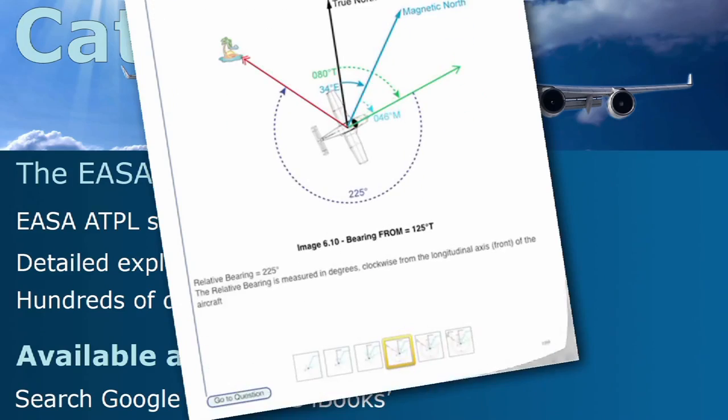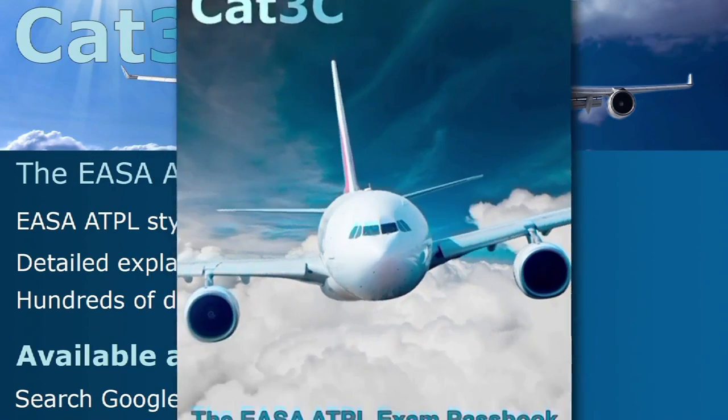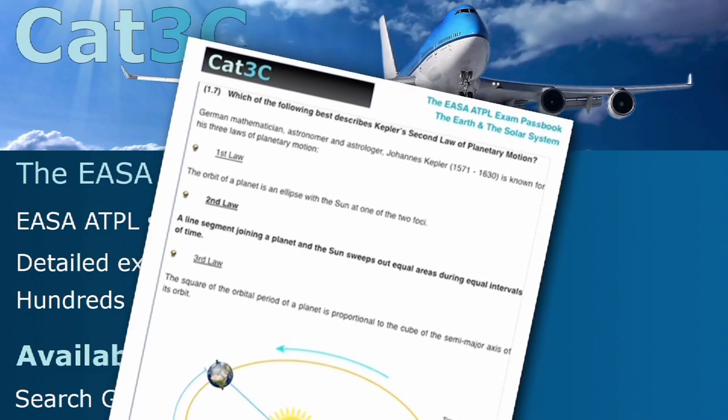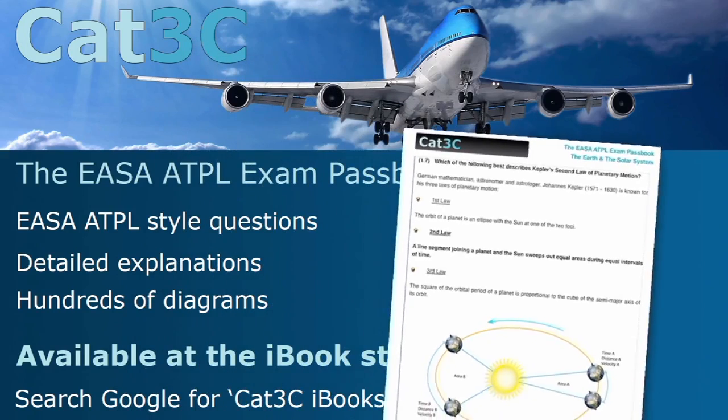The passbooks contain hundreds of exam-style questions and are supported by clear, in-depth explanations and interactive diagrams. The link to the iBooks can be found on the webpage below or at the Cat3C website at the Bookstore tab.